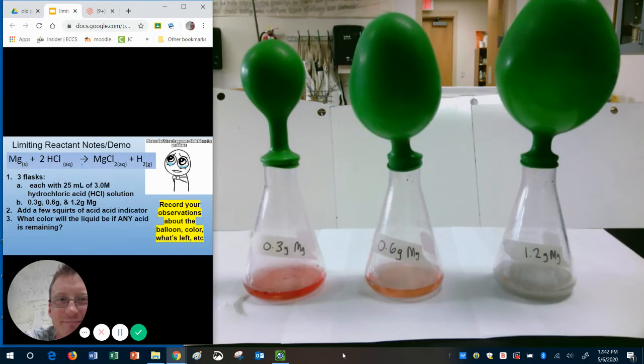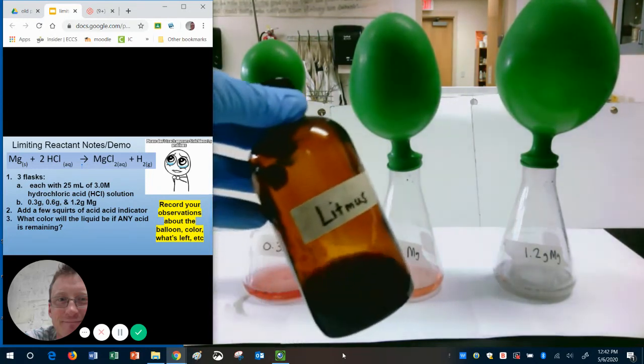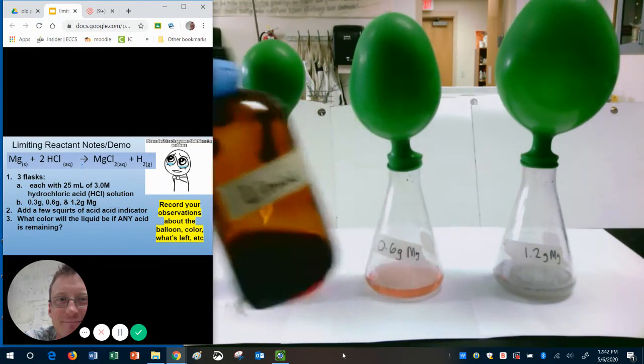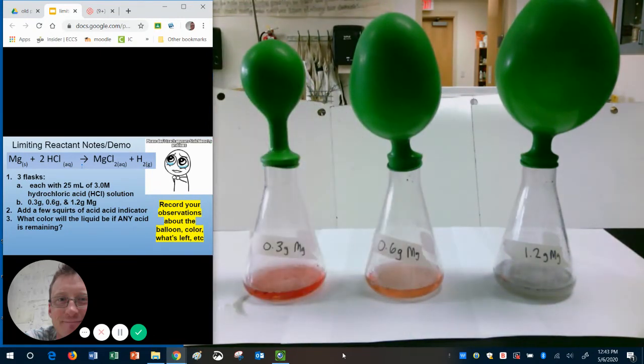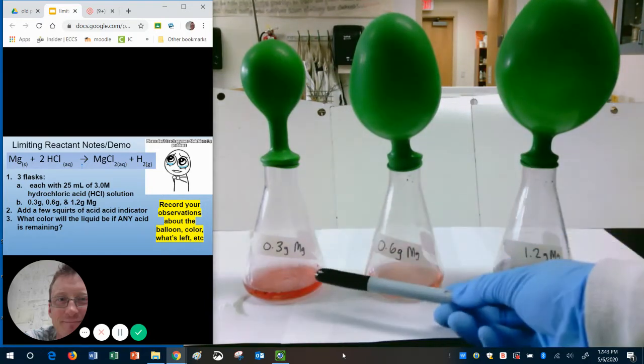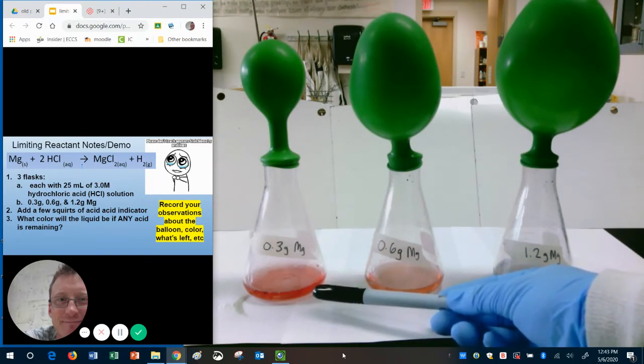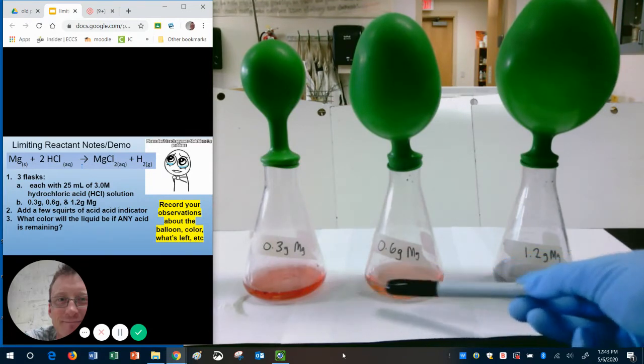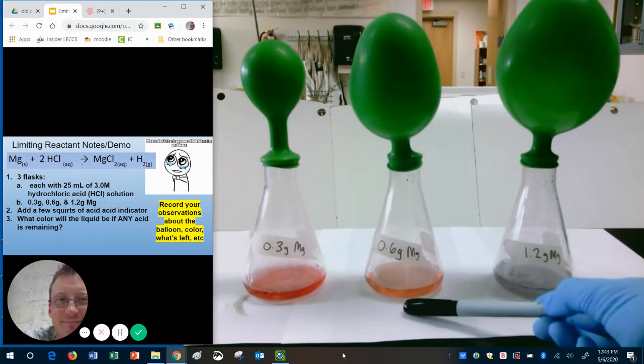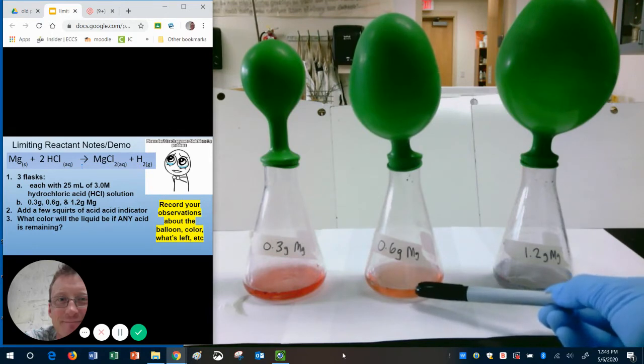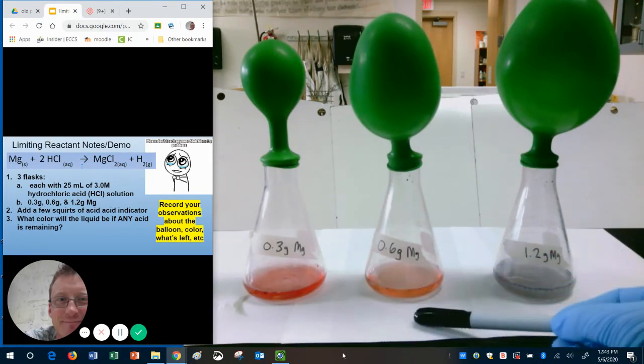According to what we had, if there is litmus in our mixture that is in contact with acid, what color should it be? It should be that pink. And notice, the first one, what must still be left over in our container? It must have some acid because it's pink. And the second one, it's less pink, but there is definitely a pinkish tinge to that liquid. So both of these must have some acid left over.